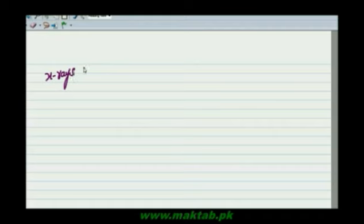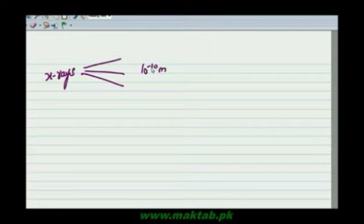This wave is so small that its wavelength is on the order of 10 to the power of minus 10 meters. That means that after the decimal point, X-rays have a wavelength of 10 to the power minus 10 meters.